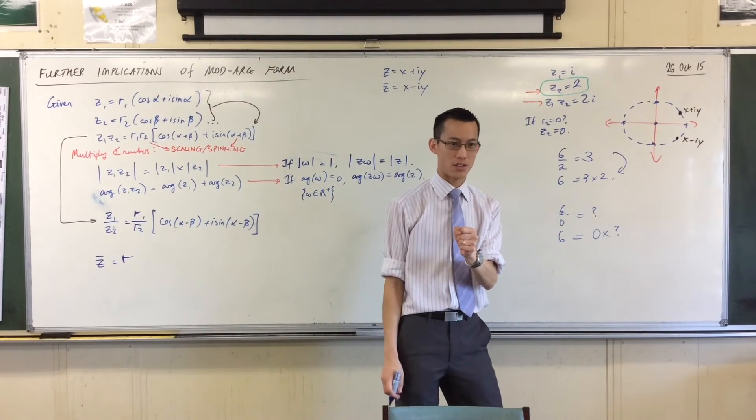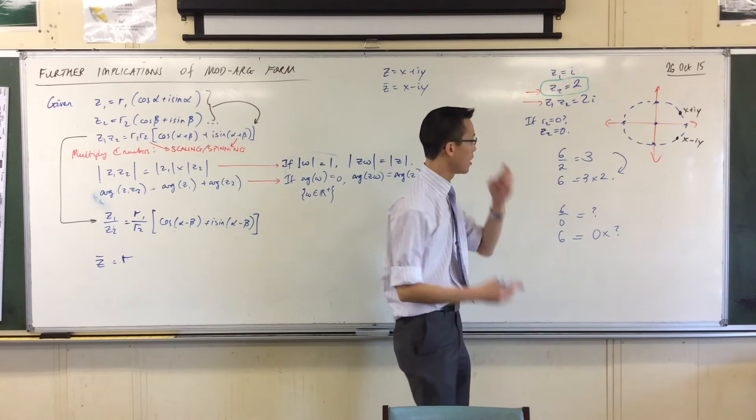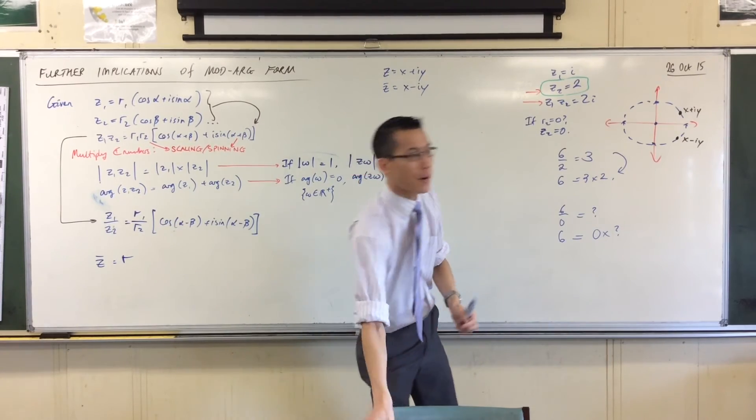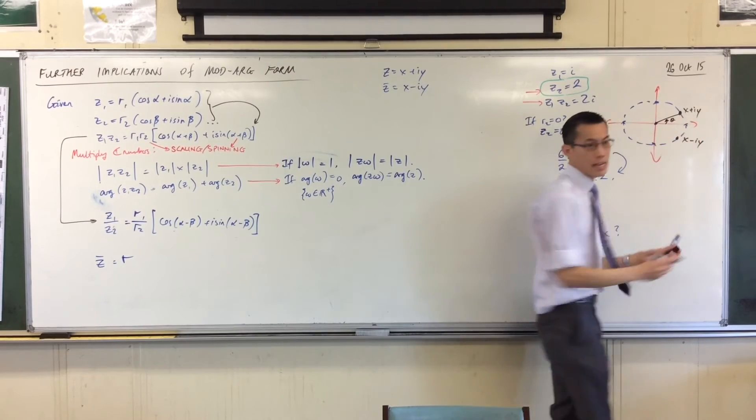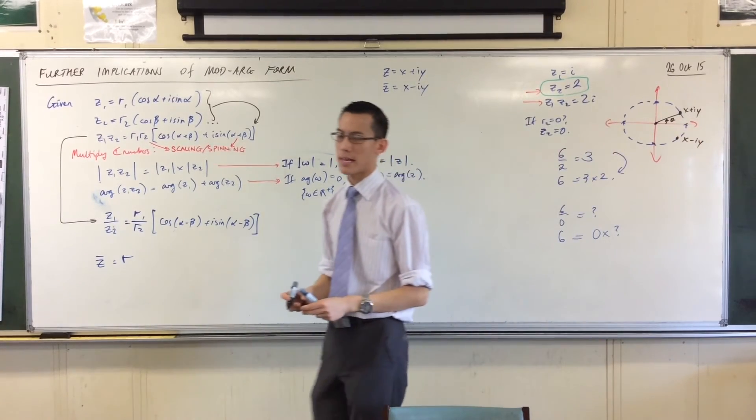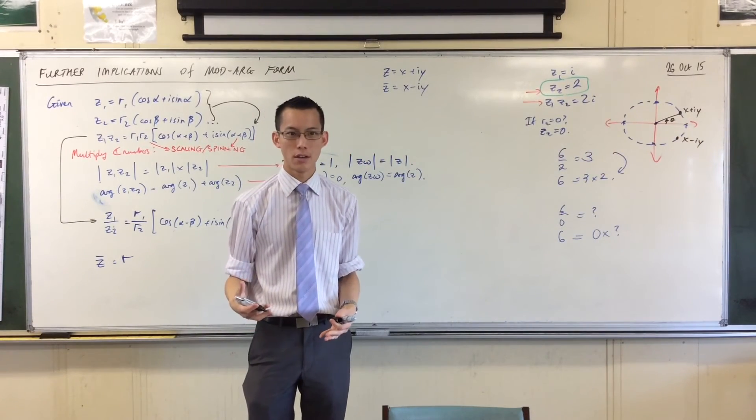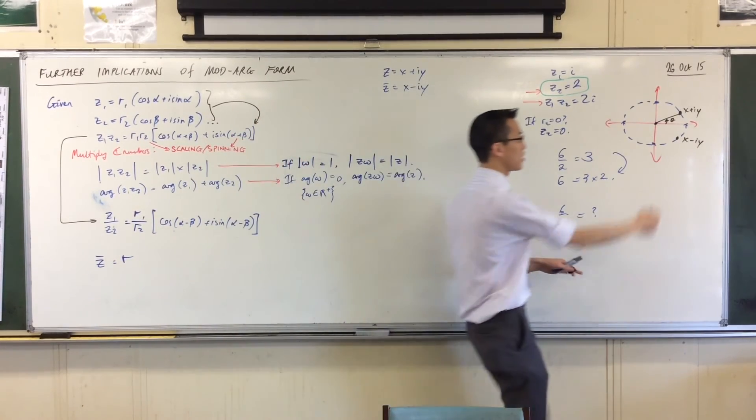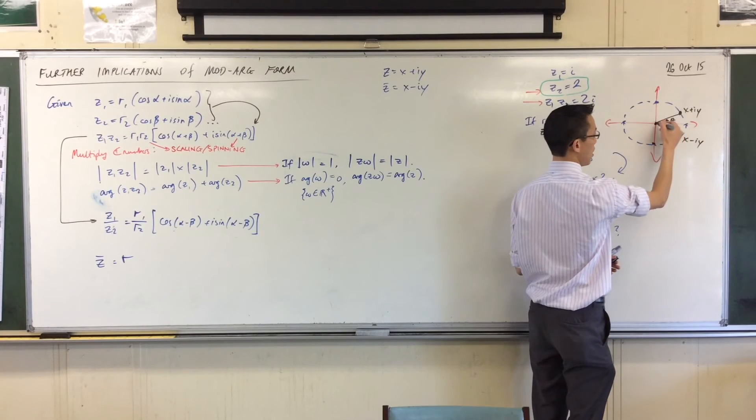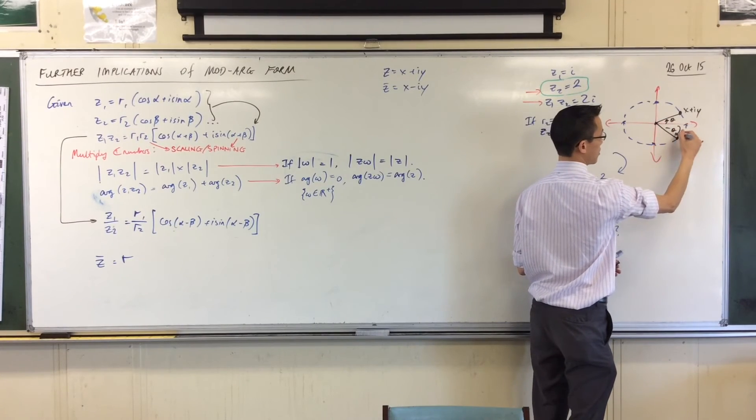But my angle has changed, right? Clearly, my angle has changed. In order to get this first number, I go up, like that. There's theta. How do I get to the second number? How do I get to the conjugate? Yeah, you don't go up, you go down. Or, I should say, rather than going anti-clockwise, I go clockwise.